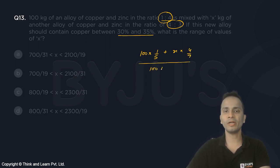Now this should be between 30% and 35%. So that means this should be greater than 30/100 and less than 35/100. All right.